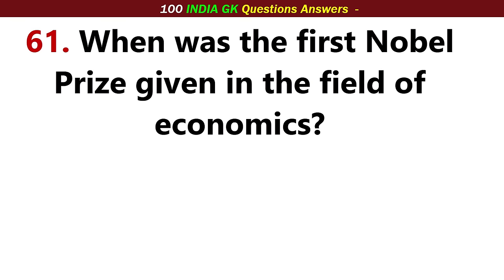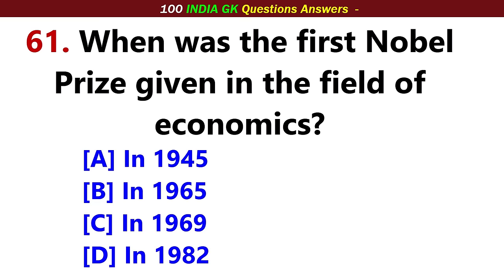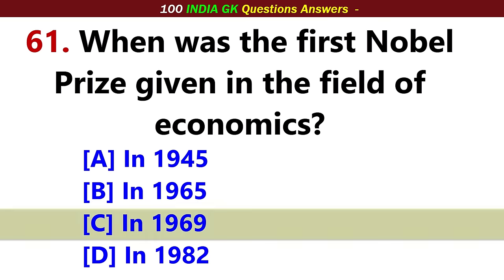When was the first Nobel Prize given in the field of economics? Answer, Option C: 1969.